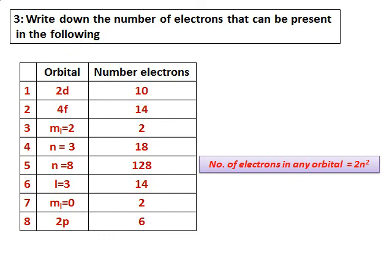Another question asks you to write down the number of electrons that can be present in given orbitals. Recall: s can hold 2 electrons, p can hold 6, d can hold 10, and f can hold 14. For any level n, the number of electrons is given by 2n². Using these values, you can answer those questions. We will go further and learn how to use all these quantum numbers in something called electronic configuration.